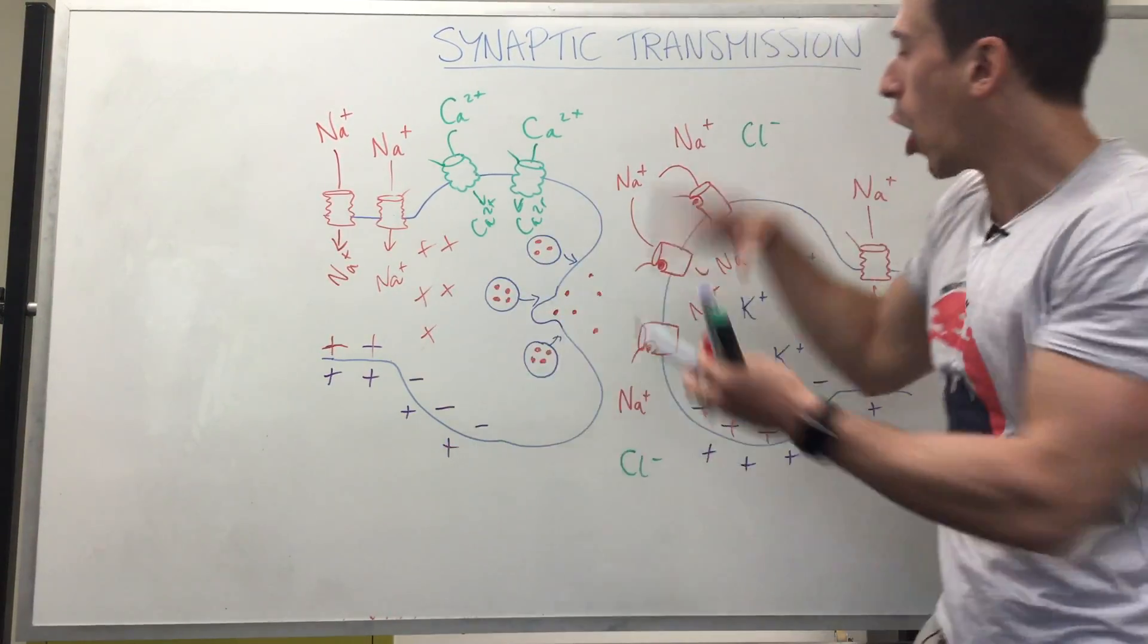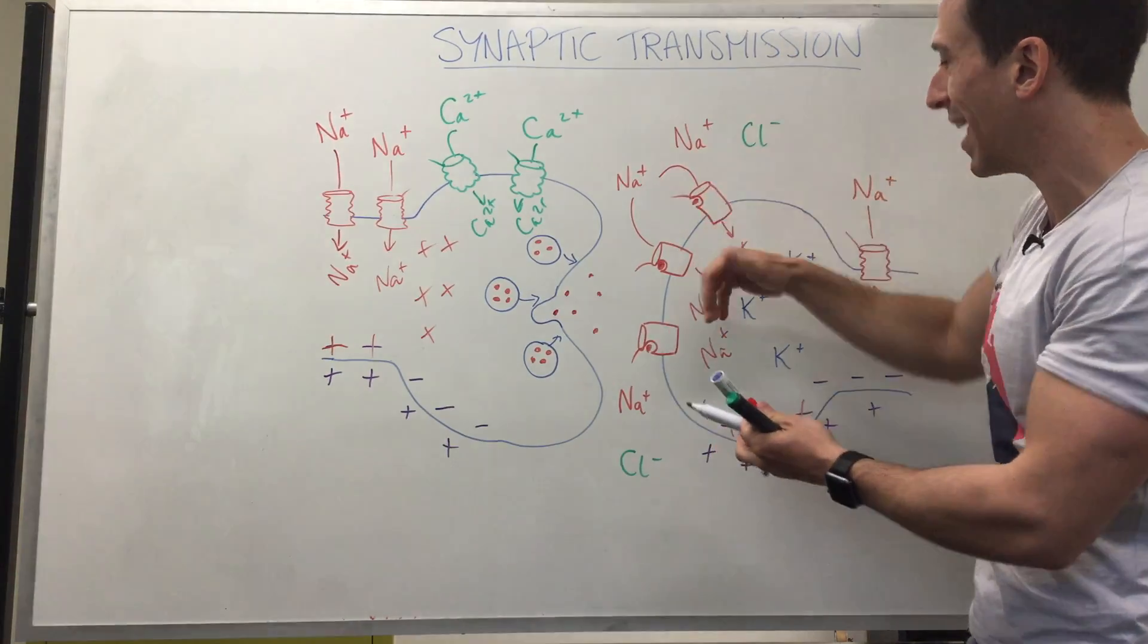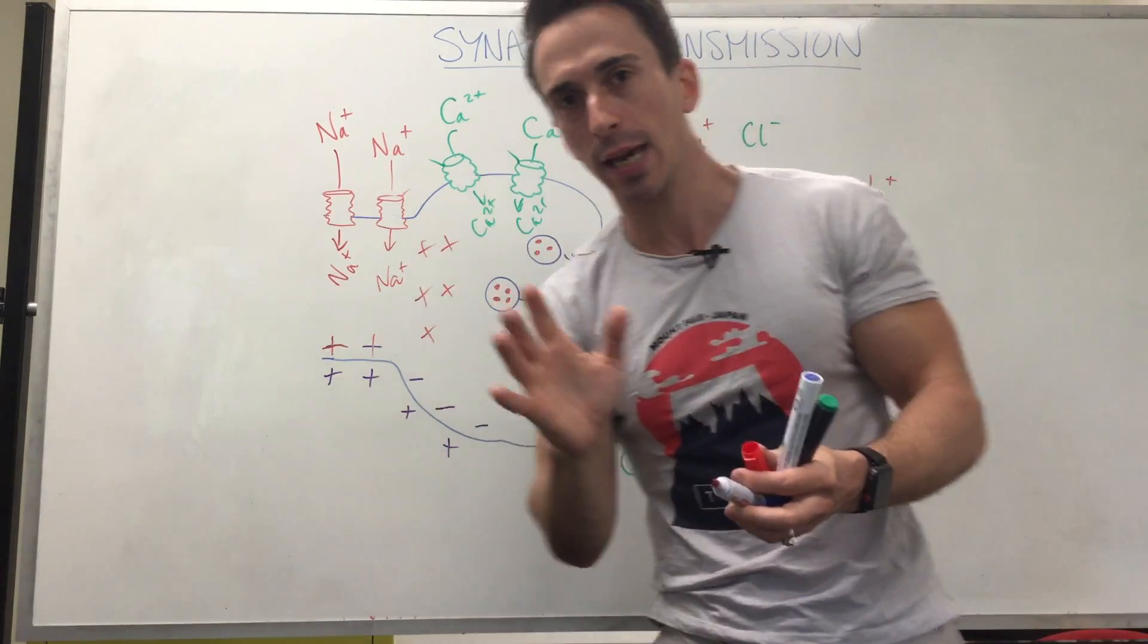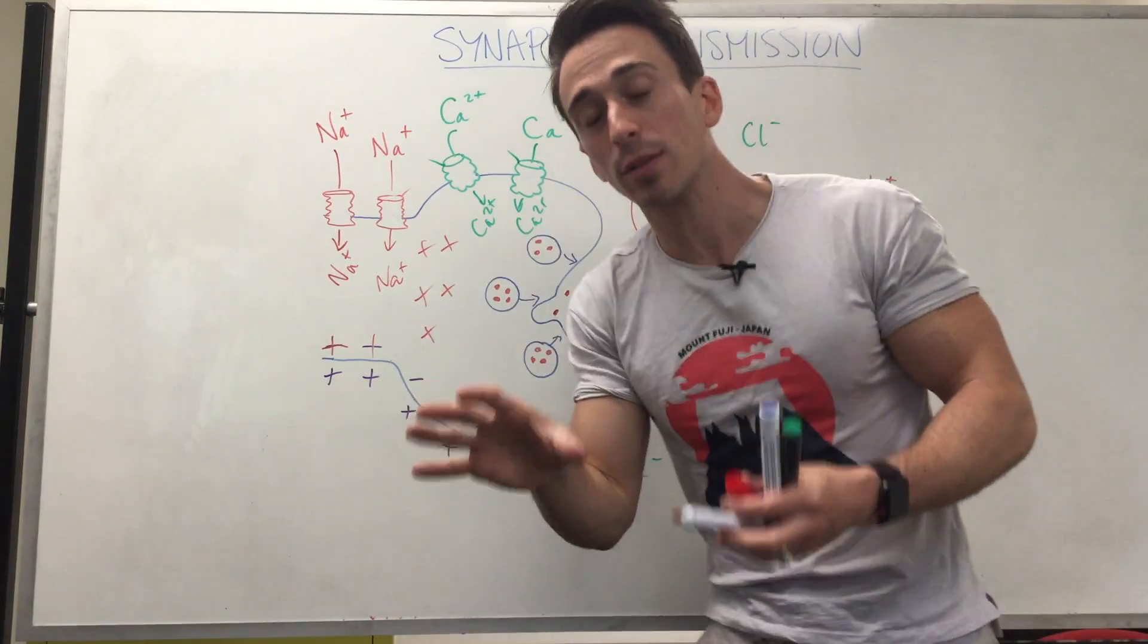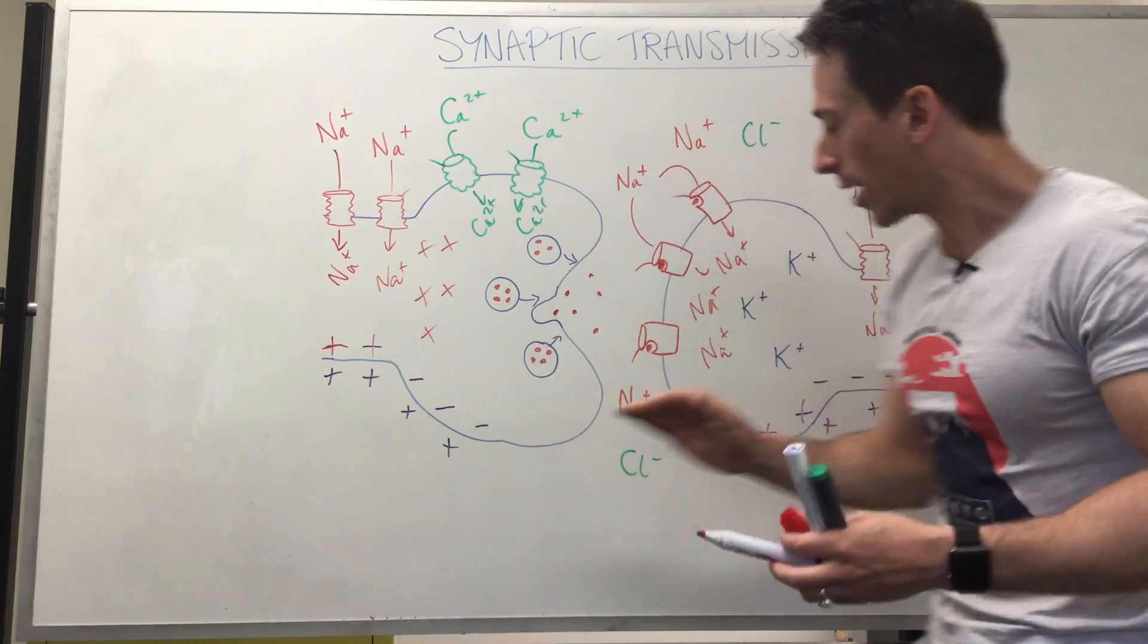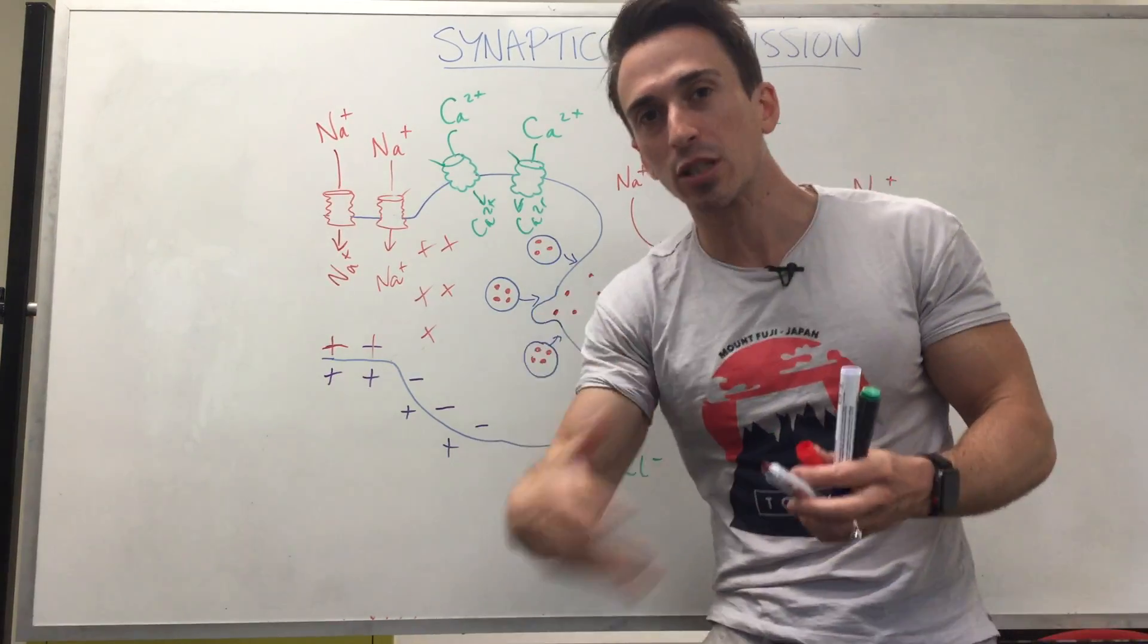If it's excitatory, it'll open up sodium channels for sodium to come in and that stimulates the action potential again. Now this is for a neuron. Sometimes this neuron is going to synapse with an organ. Sometimes it's going to synapse with a muscle. If it synapses with a muscle, that's called the neuromuscular junction.